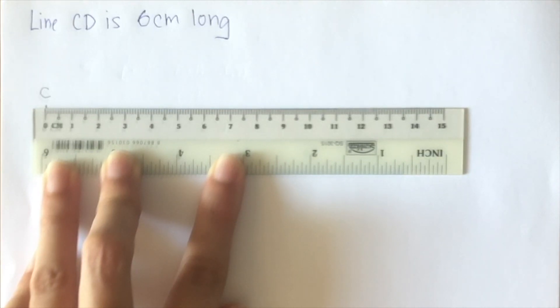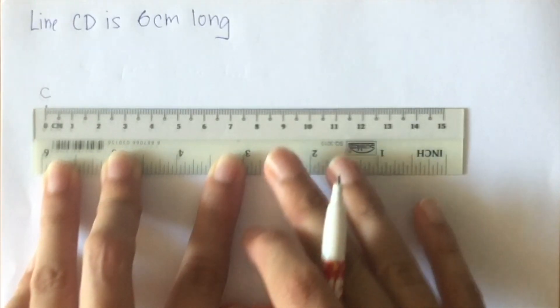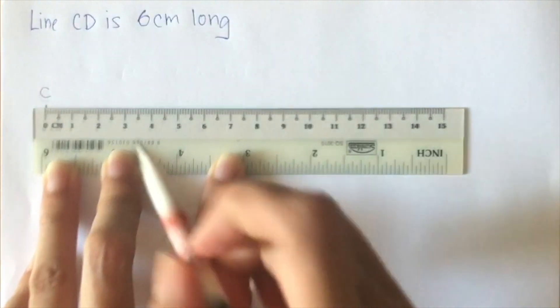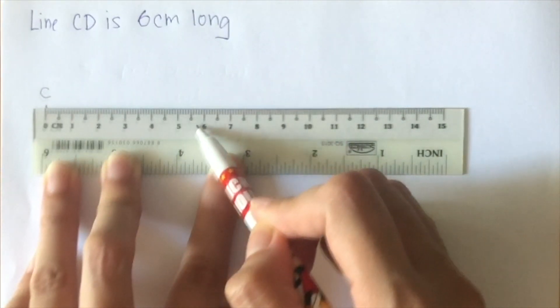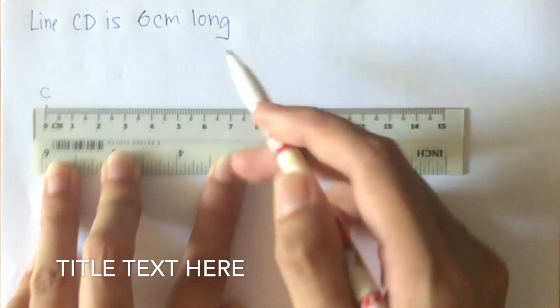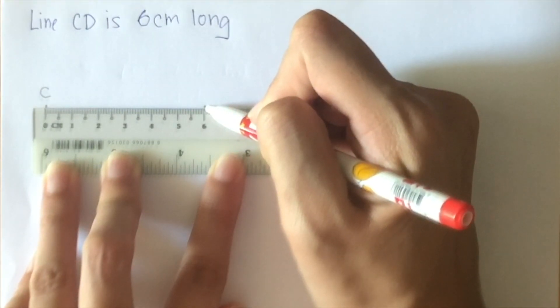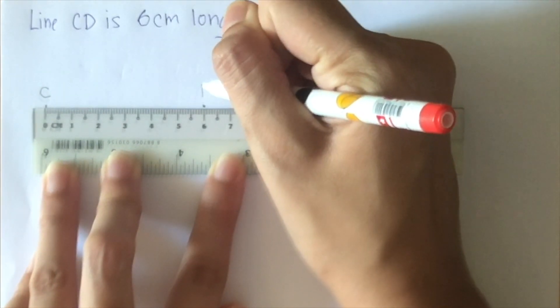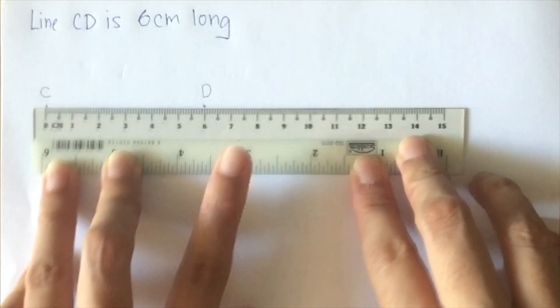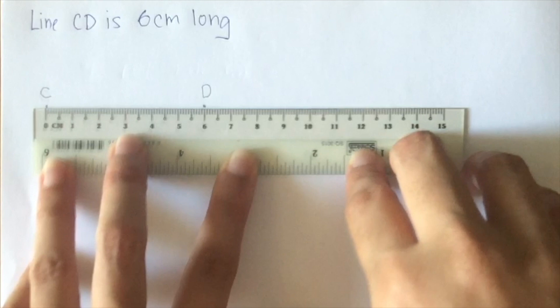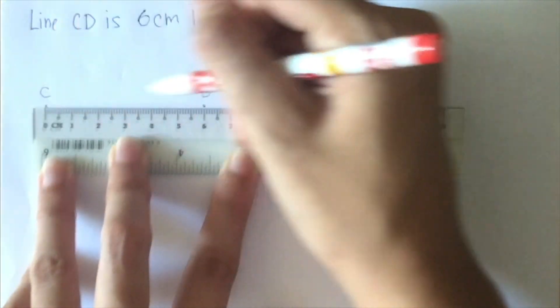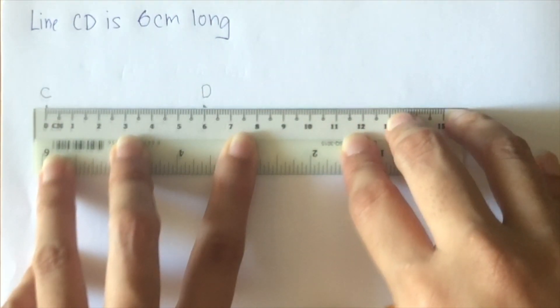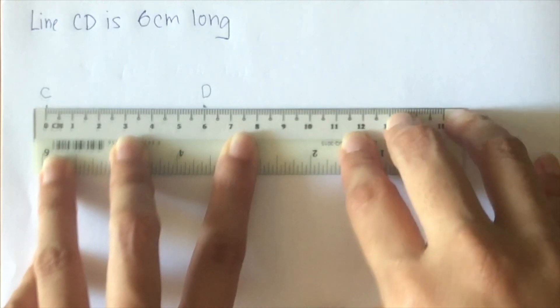Once you have done that, you make a mark and we label it C. Are you able to do it? Next, because we know that CD is six centimeters long, we take a look at the markings and look for six centimeter. And we draw another mark above the six centimeter mark, and we label it D.